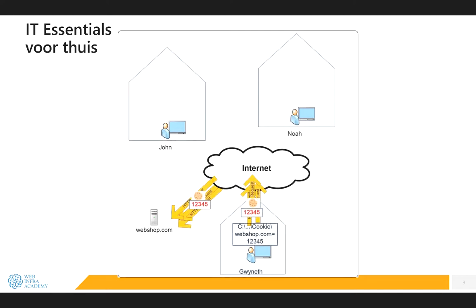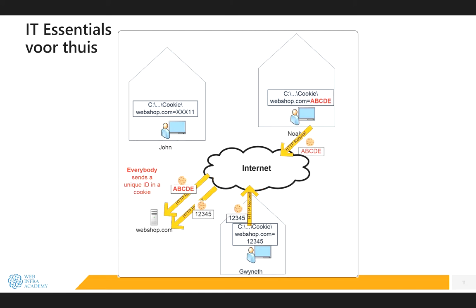So all requests sent from Gwyneth's browser will have this cookie with the unique ID 12345. Now webshot.com knows which requests belong to each other — all requests with ID 12345 belong to Gwyneth, belong to one user. Webshot.com does this for every user. For example, NOAA will also get a unique ID, say ABCDE. So all requests from NOAA will have a different unique ID, and in this way webshot.com knows to whom all the requests belong and can separate them.